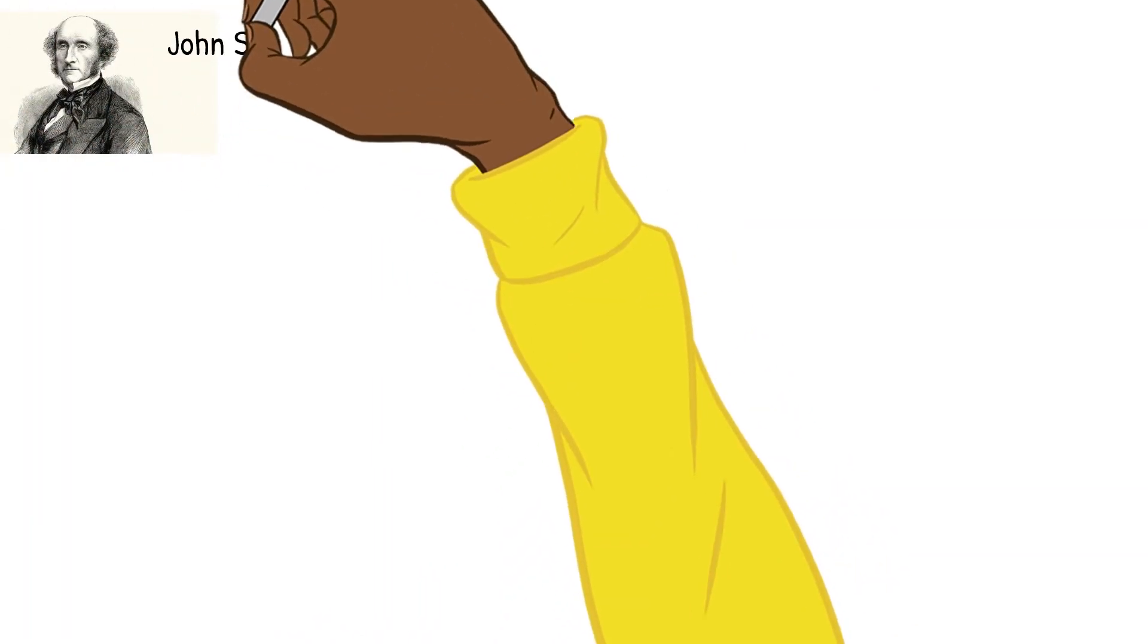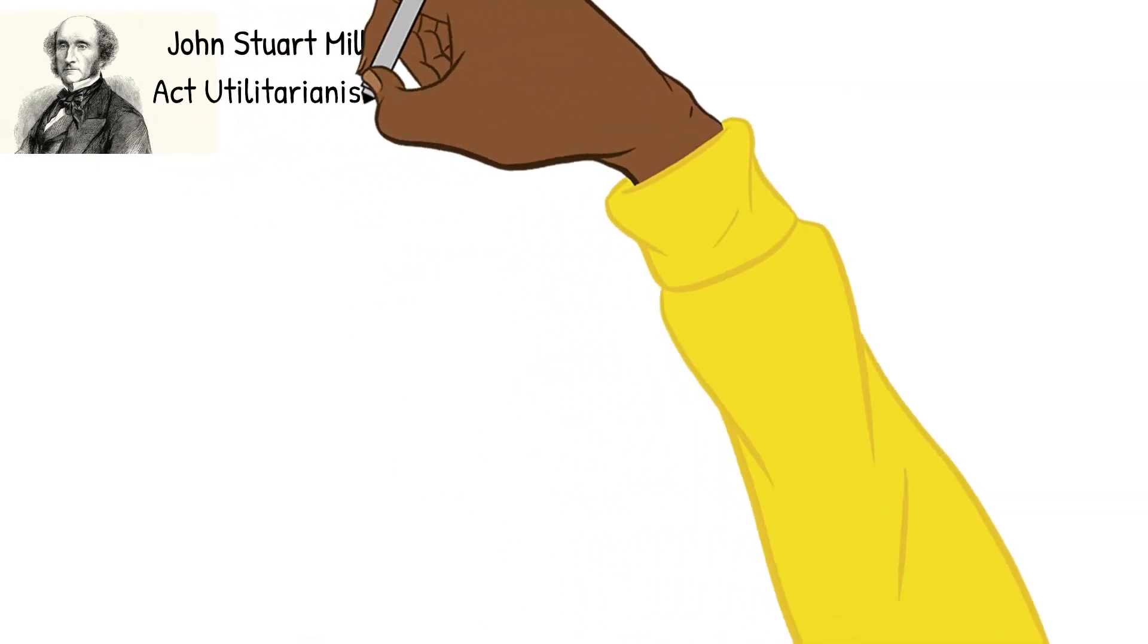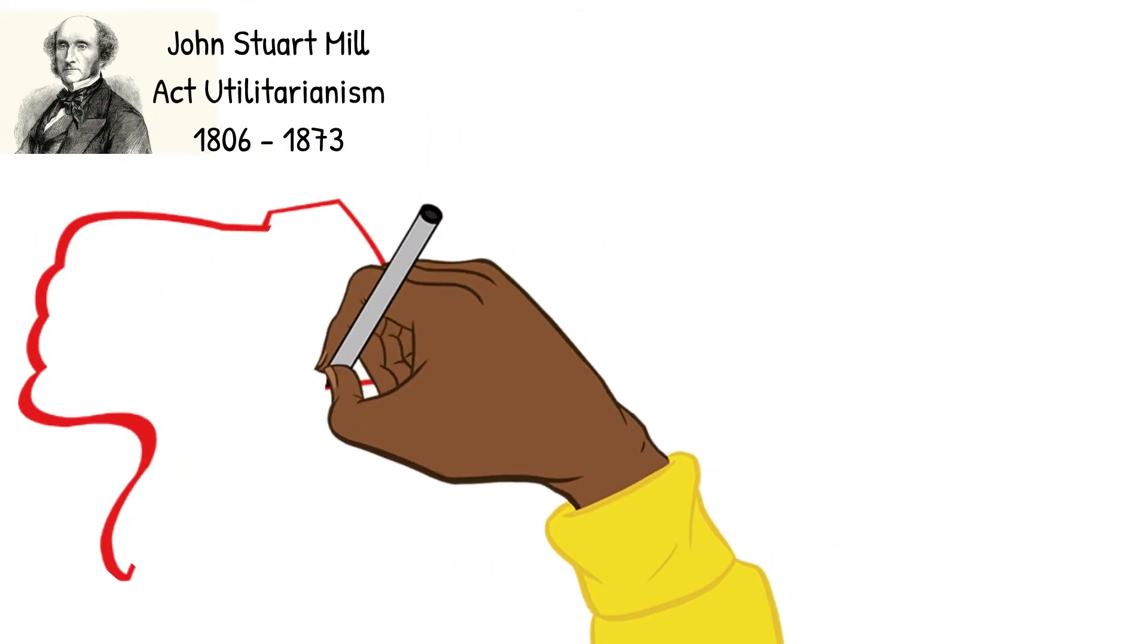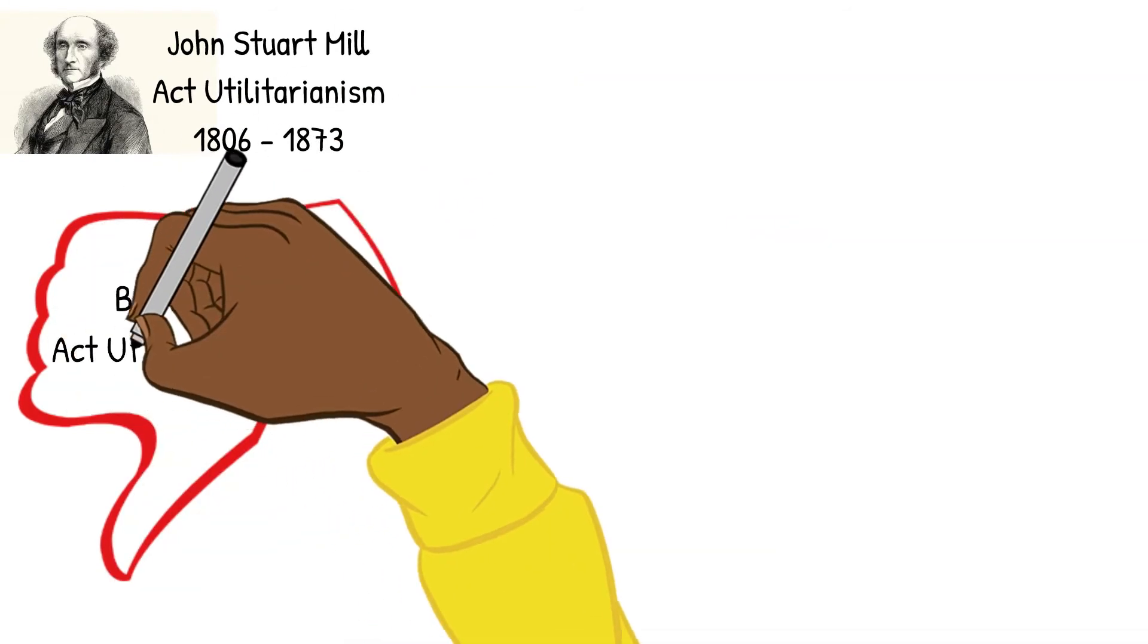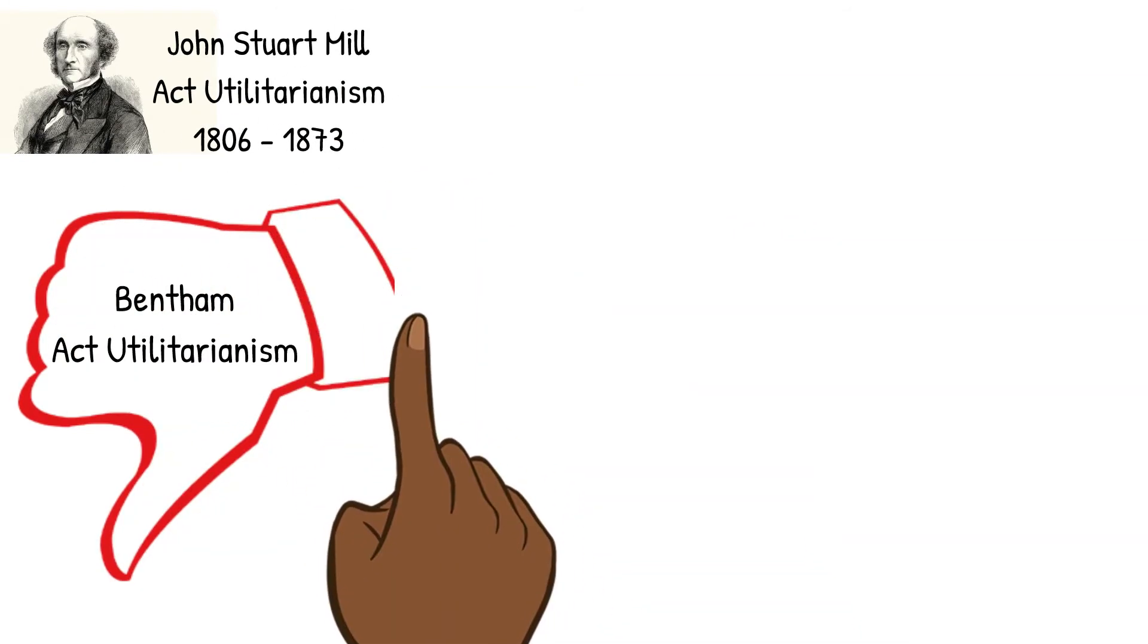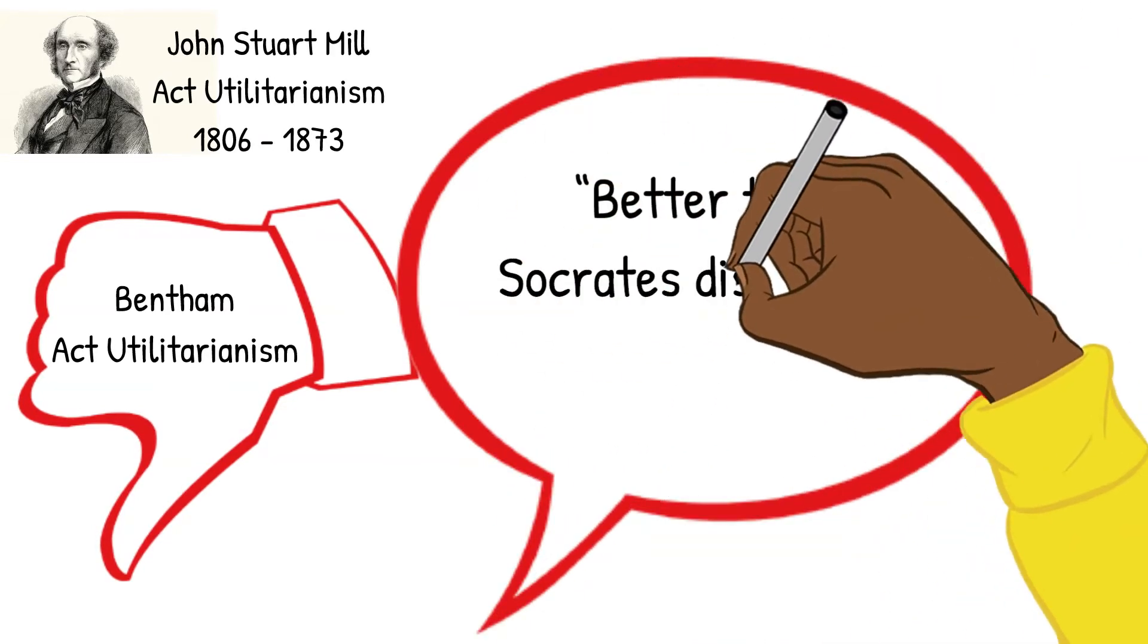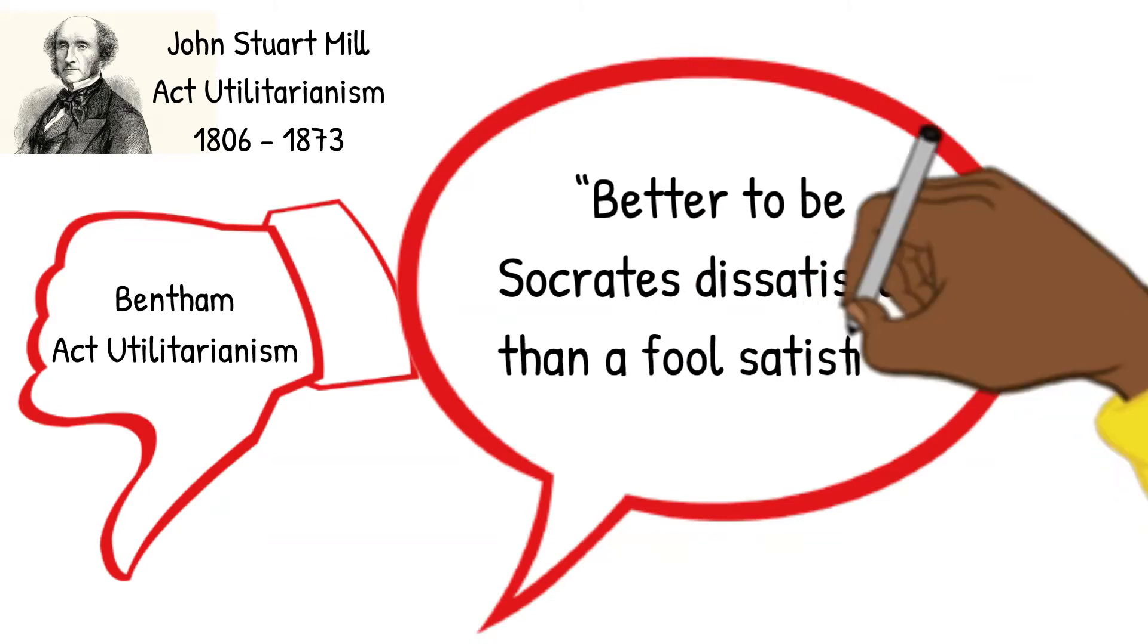Mill was uncomfortable with some of the implications of Bentham's utilitarianism. He suggested that utilitarian principles could be used to make rules of thumb to live by. He took a qualitative approach. His iconic quote of 'better to be a Socrates dissatisfied than a fool satisfied' projected the notion of some pleasures being more valuable than others.